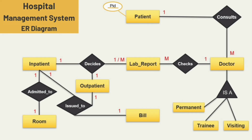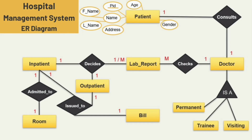Patient ID (P_ID) is the key attribute. The second attribute is name, and here I am using a composite attribute, breaking down the name attribute into two sub-attributes: first name and last name. The next attributes are age, gender, address, doctor ID, and disease.